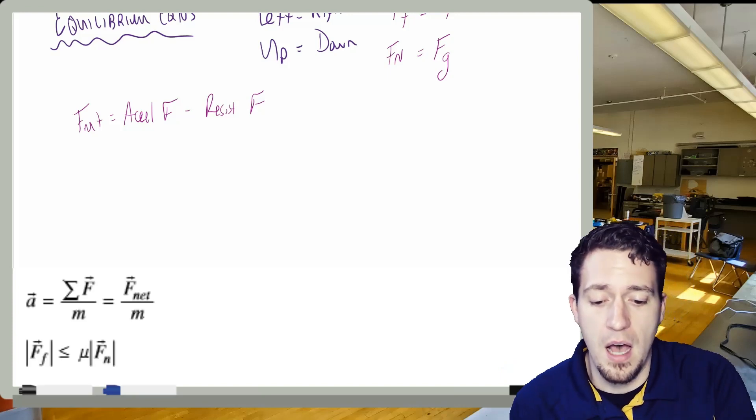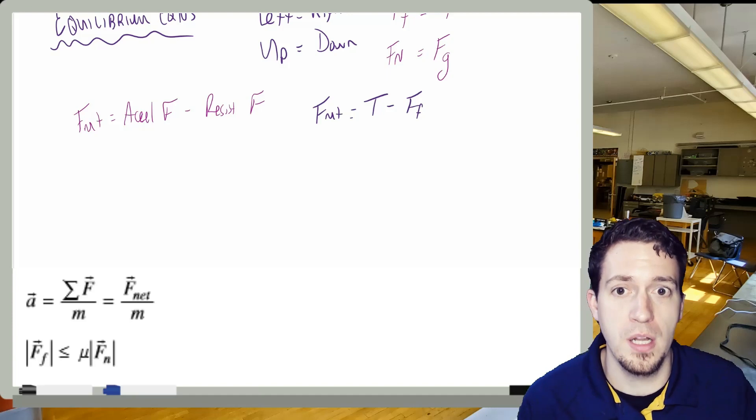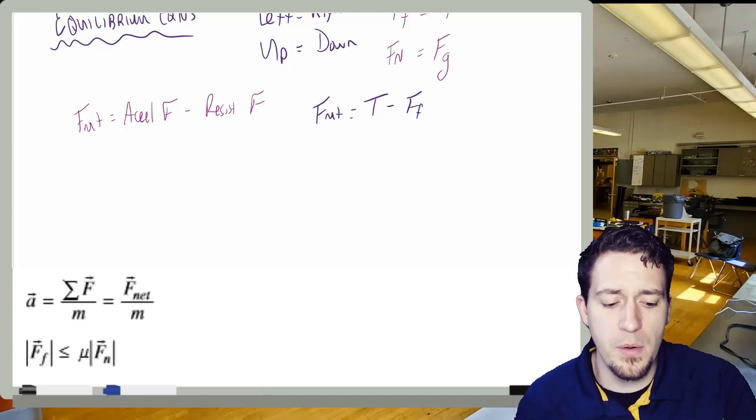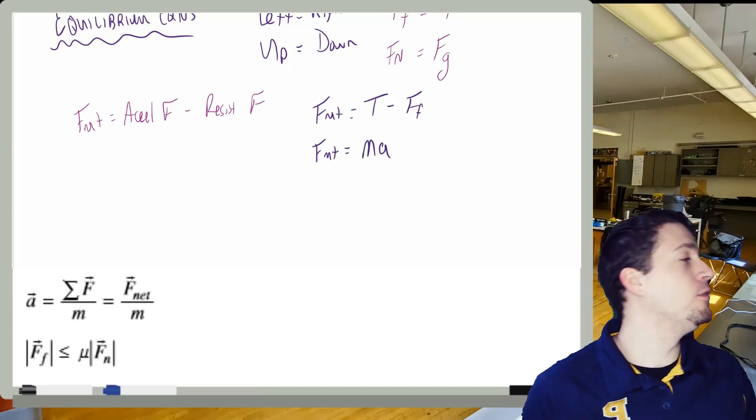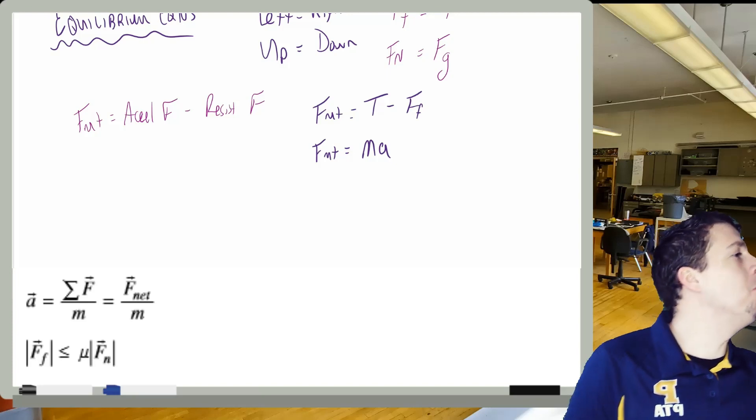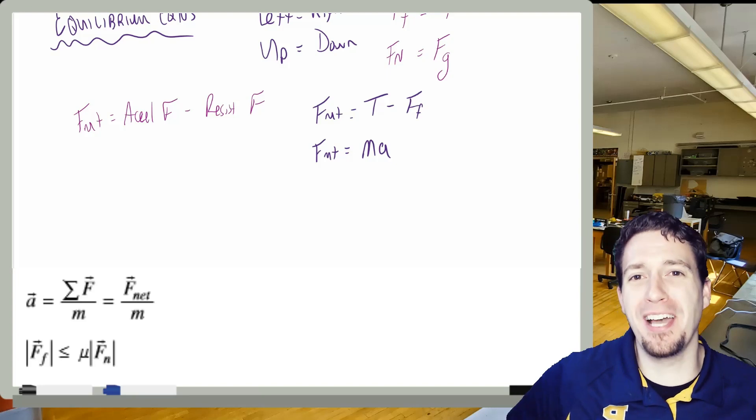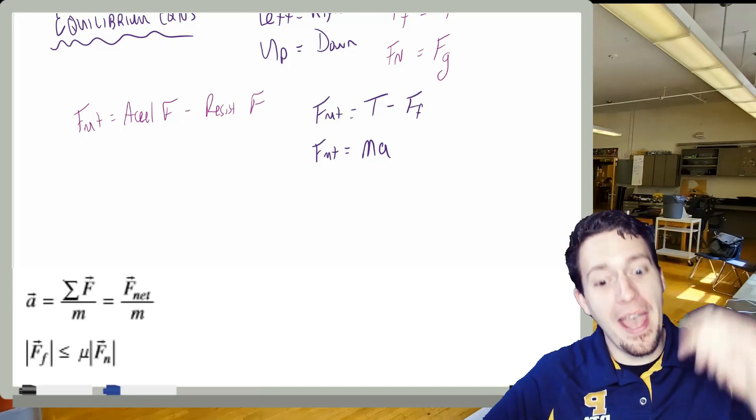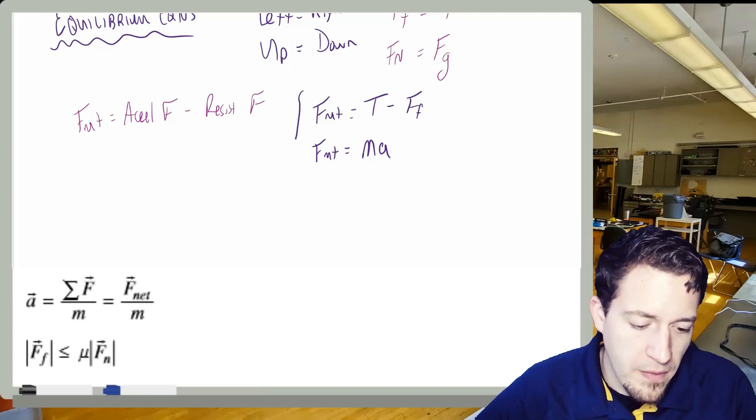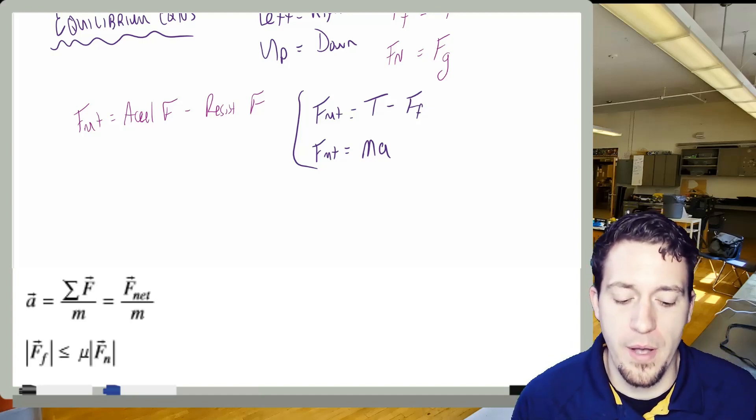So if I was going to set that up, then that would be, we would have F_net, right? And in that example would be tension minus the force of friction, because force of friction is my resistive thing. And the next thing we always did beneath this is we said F_net, and this is, Mom, Meatloaf! Mom! Mom! I don't think she can hear me. Probably because she's not in this county.